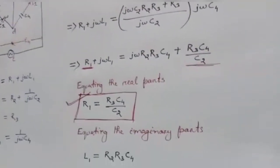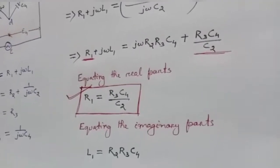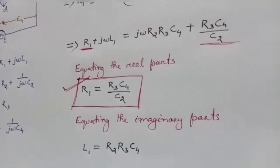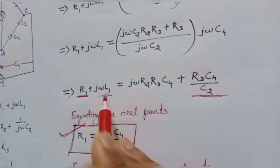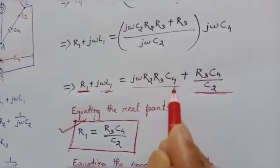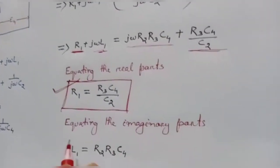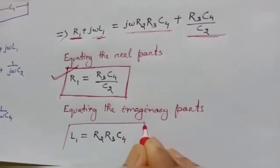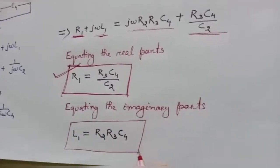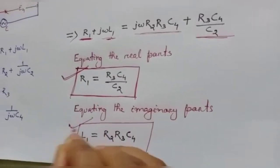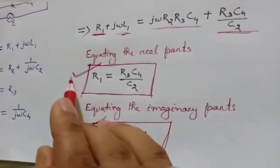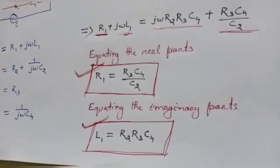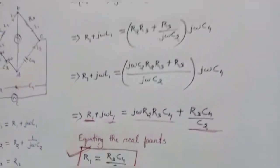Equating the imaginary parts, we have j·ω·L1 equal to j·ω·R2·R3·C4. Therefore the value of L1 is equal to R2·R3·C4. Now we have found both unknown parameters L1 and R1 of this bridge. The next important thing is how to draw the phasor diagram of this bridge.